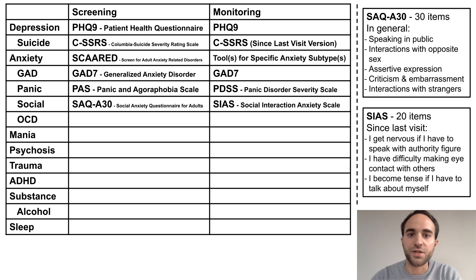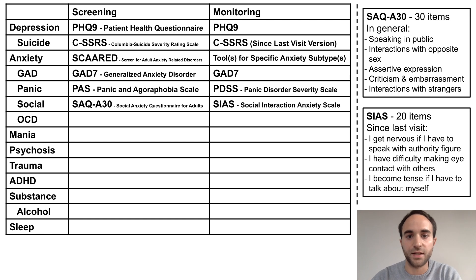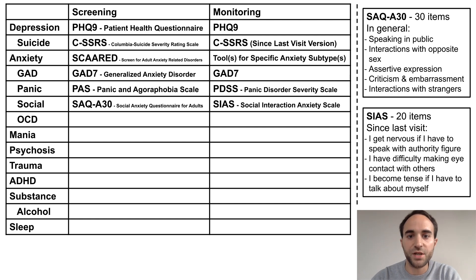For social anxiety, the SAQ-A30 is a longer tool that measures social anxiety in five different domains: public speaking, romantic interactions, assertive expression, criticism and embarrassment, and interactions with strangers. The SIAS is briefer and specifically monitors problems in social interactions.